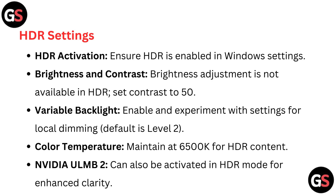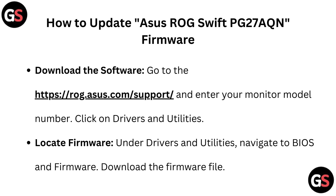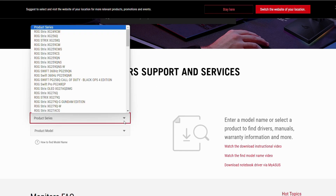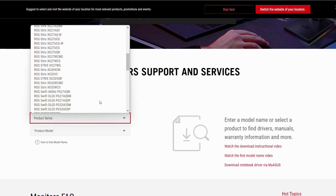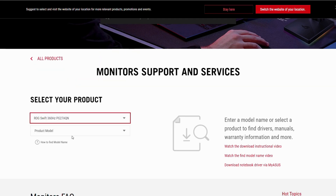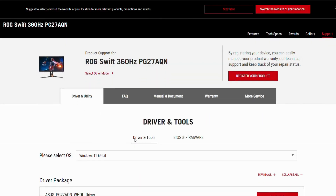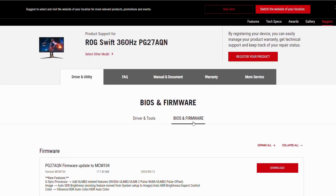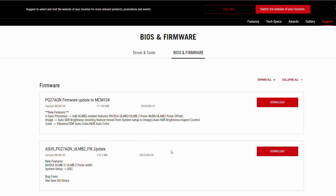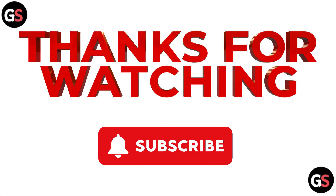NVIDIA ULMB 2 can also be activated in HDR mode for enhanced clarity. To update the ASUS ROG Swift PG27AQN firmware: go to the ASUS ROG website — the link is in the description below — and enter your monitor model number. Click on Drivers and Utilities, locate the firmware section, navigate to BIOS and firmware, and download the firmware file.